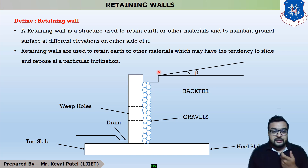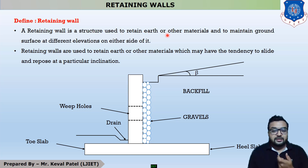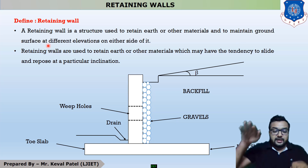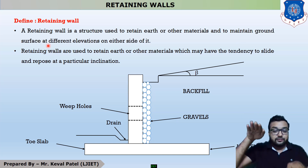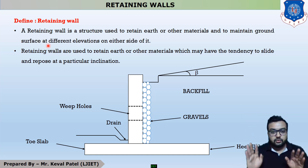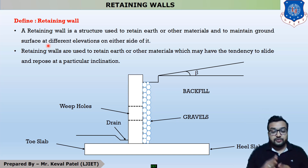The retaining wall is a structure used to retain earth or any other material and to maintain ground surface at different elevations on either side of it. This is the definition of retaining wall.